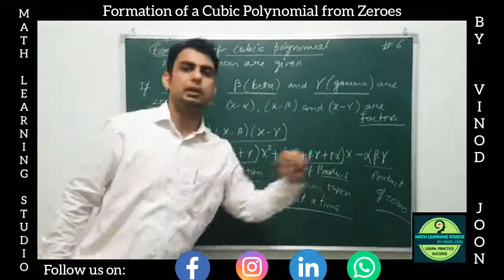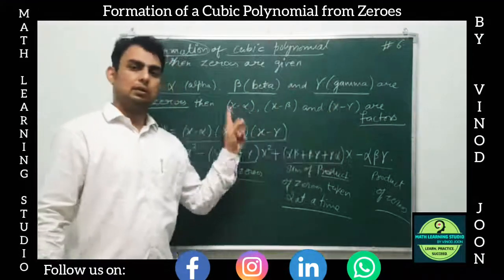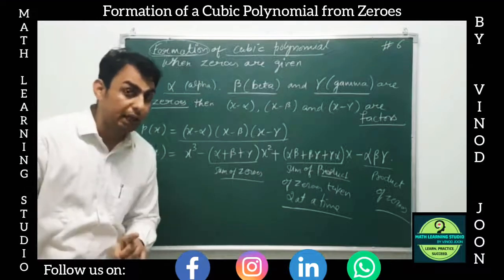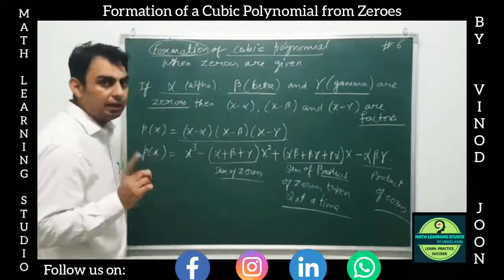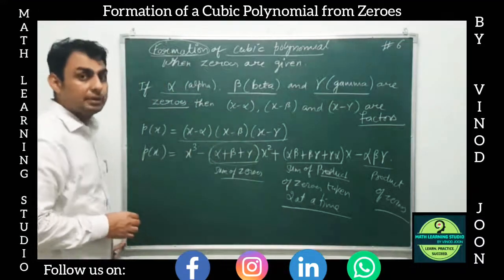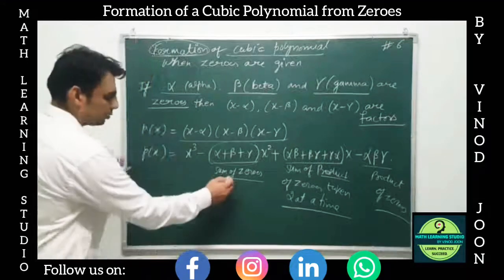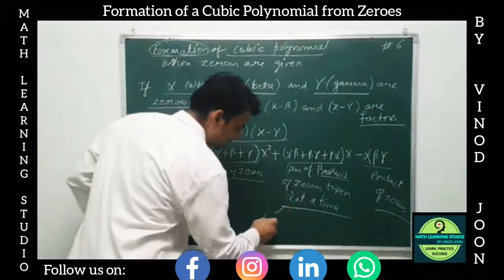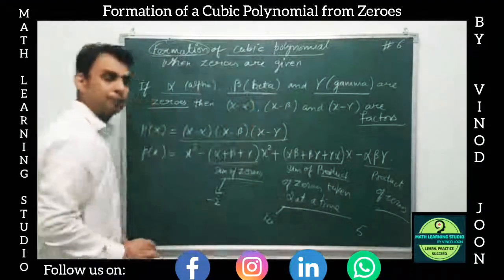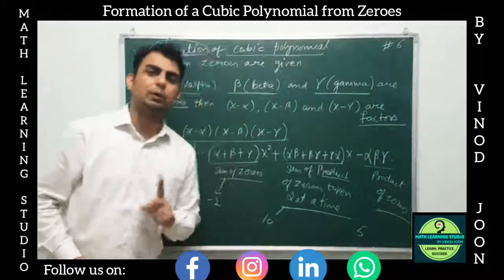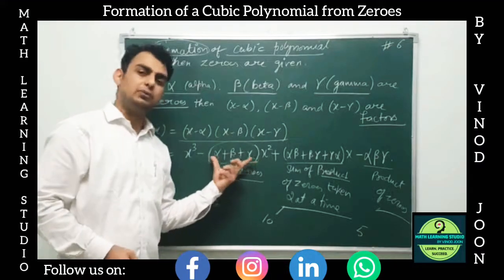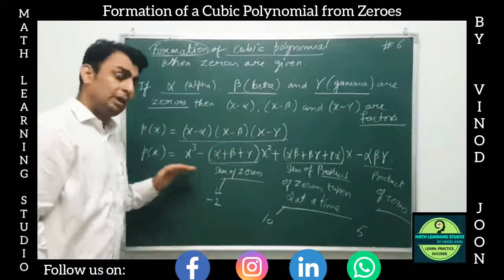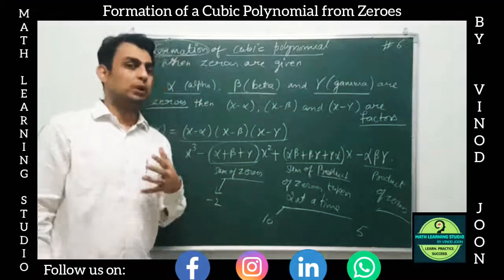We just need to have the zeros and replace the values in place of alpha, beta, and gamma in this formula. Sometimes the question will directly give you these values — for example, the sum of zeros is minus two, the sum of the product of zeros taken two together is ten, and the product of zeros is five — so you put those directly into the formula.